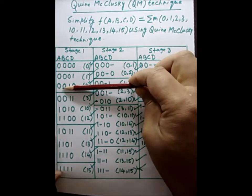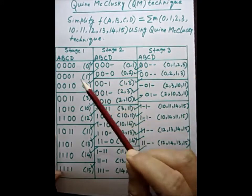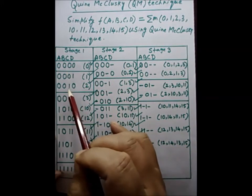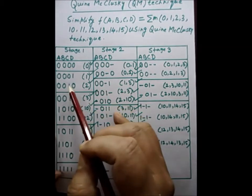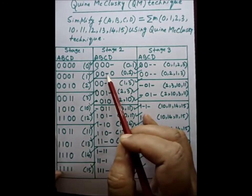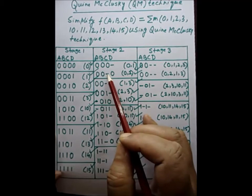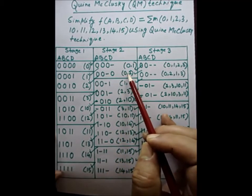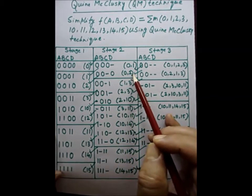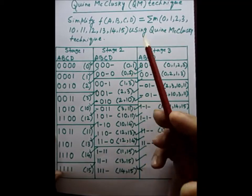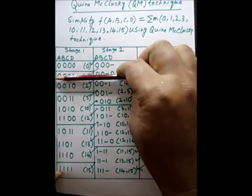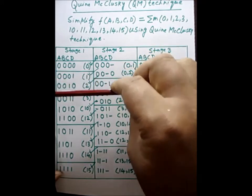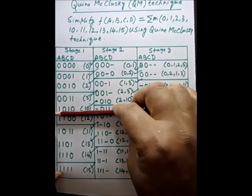Continuing, 0000 is mapped with 0010: c-bar and c differ, so c is eliminated and we place a dash in the third position. The result is 0-00 with bracket (0,2). In this way we continue, and all elements of the second group are mapped with all elements of the third group.